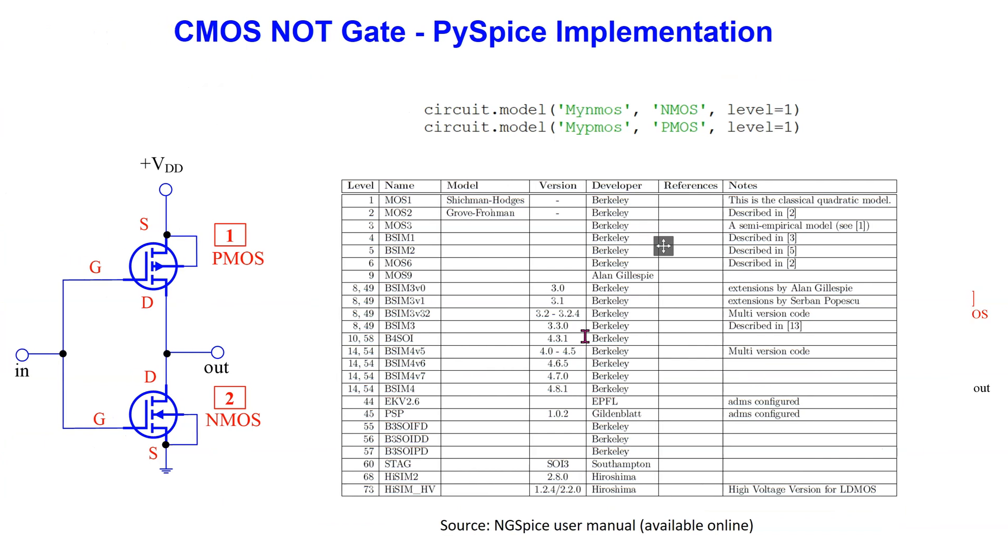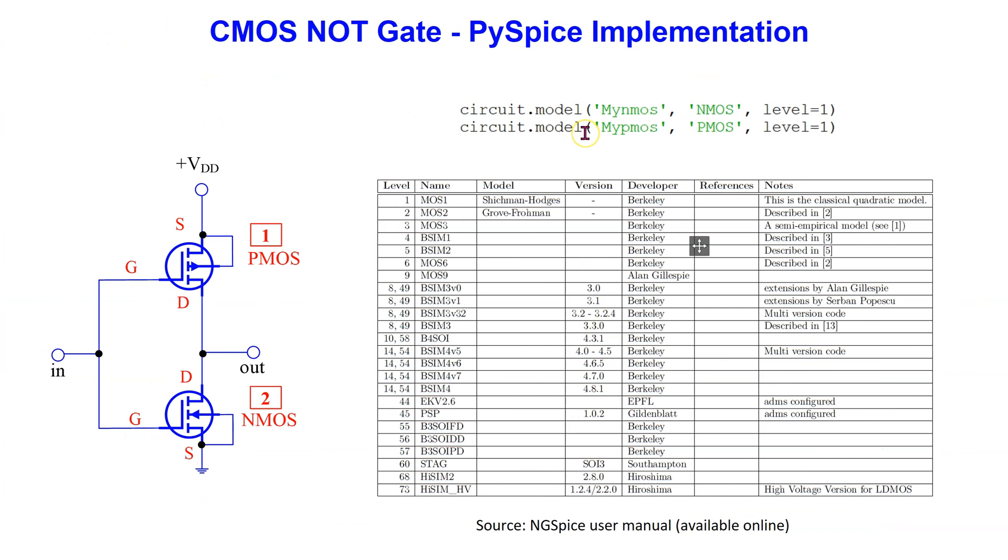To implement a CMOS NOR gate in PySpice, we need a suitable model for MOSFETs. This table here is showing the MOSFET models built into NG Spice. For our simulation, we use the most basic level 1 model. This model can be accessed using the syntax shown here.